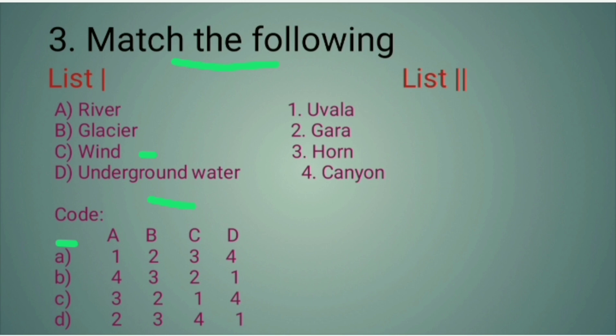The answer is B. Option B is the right answer. The correct matching is: River - Horn, Glacier - Gara, Wind - Uvala, Underground water - Canyon.